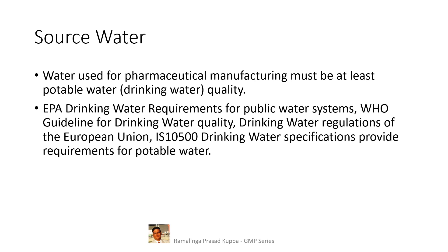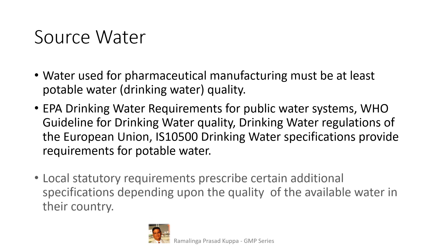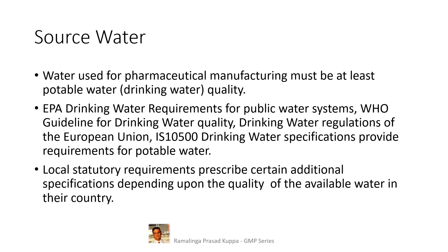EPA drinking water requirements for public water systems, WHO guidelines for drinking water quality, drinking water regulations of the European Union, and IS 10,500 drinking water specifications all provide requirements for potable water. There are many similarities within these guidelines; however, based on local and statutory requirements, there may be variations in compliance specifications. Local statutory requirements prescribe certain additional specifications depending upon the quality of available water in their country, so it is necessary to check local statutory specifications while considering potable water quality for manufacturing.